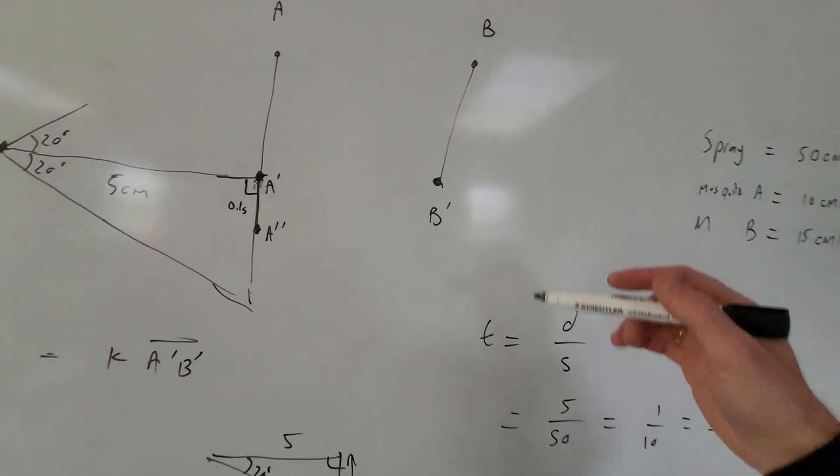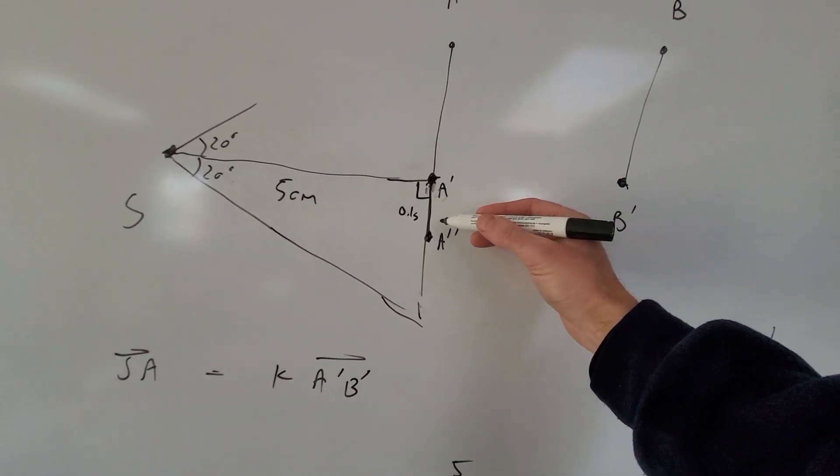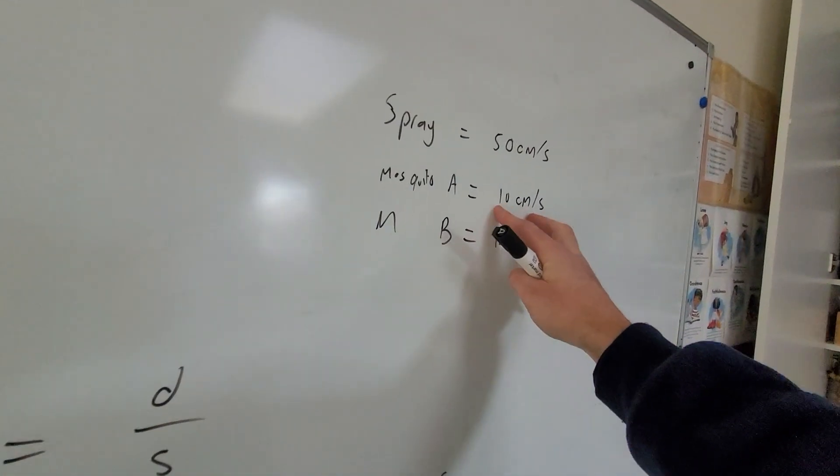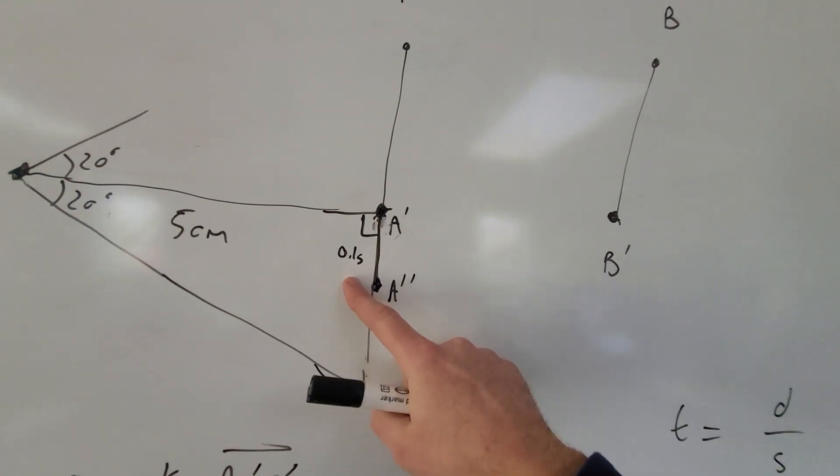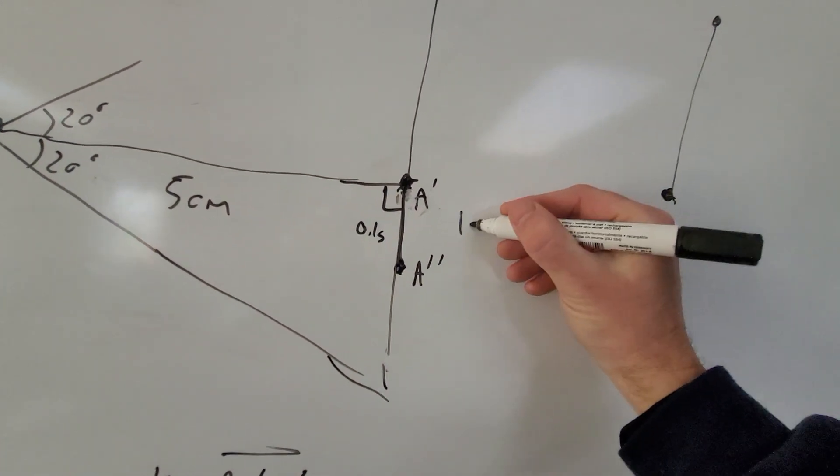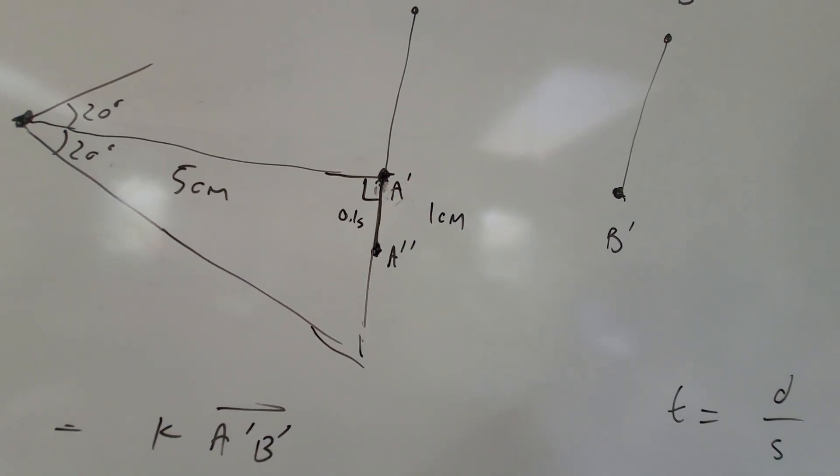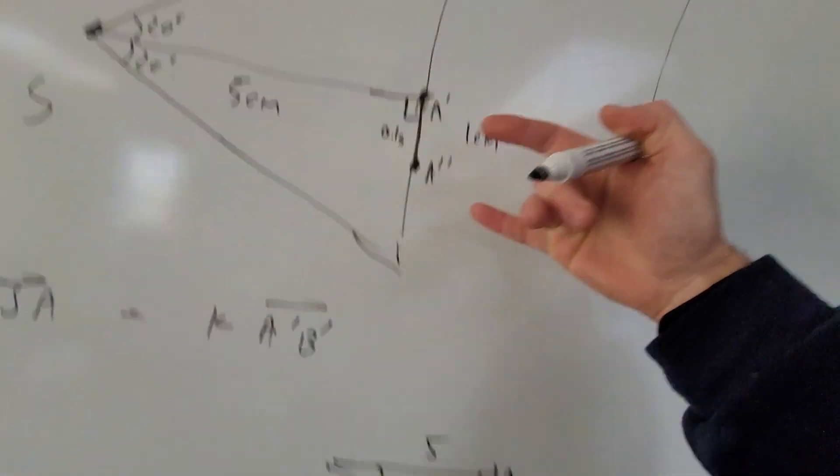And we can anticipate the same for B. So for instance, mosquito A, we've got the mosquito A travels at 10 centimeters a second. How far is it going to travel in 0.1 seconds? Well, it's going to travel 1 centimeter. OK, so what that means is mosquito A's new position is 1 centimeter along.